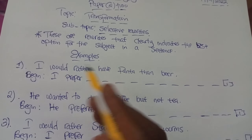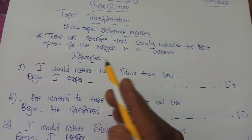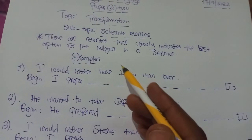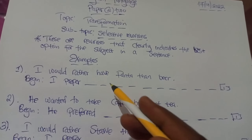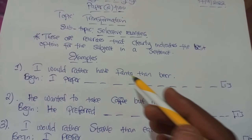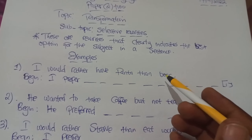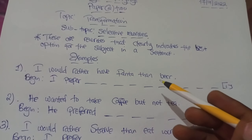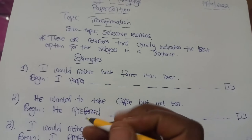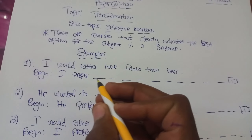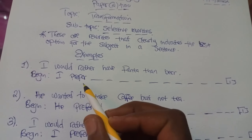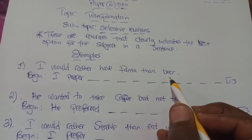When we say 'rather,' as in 'I would rather have' — this is not actually happening, it's just an assumption. 'I would rather have Fanta than beer' means that if given a chance to choose between Fanta and beer, I would go for Fanta. That's what it means. So, begin: 'I prefer.'